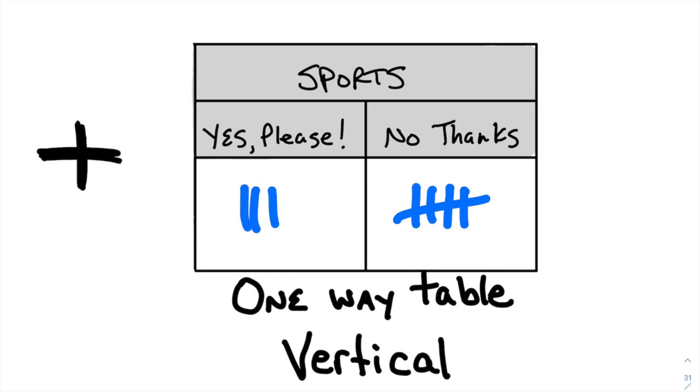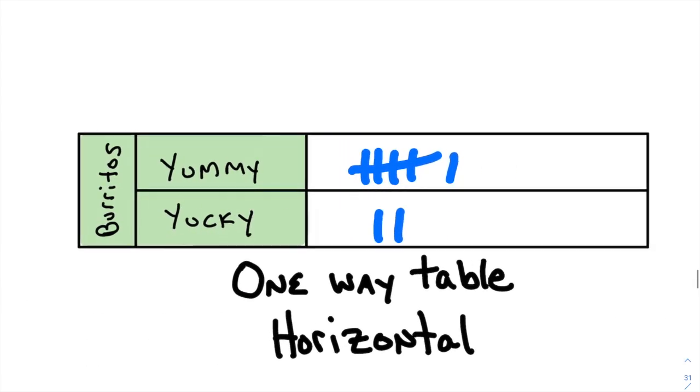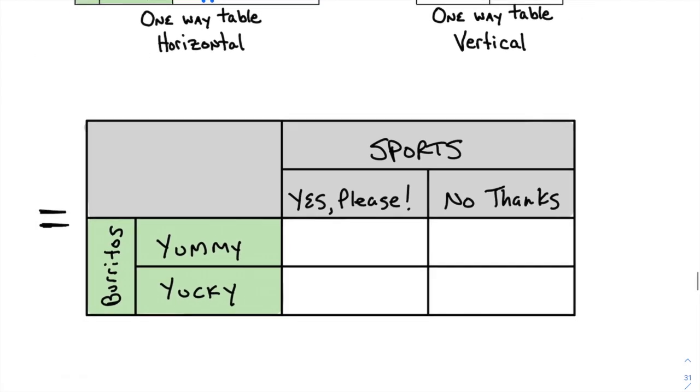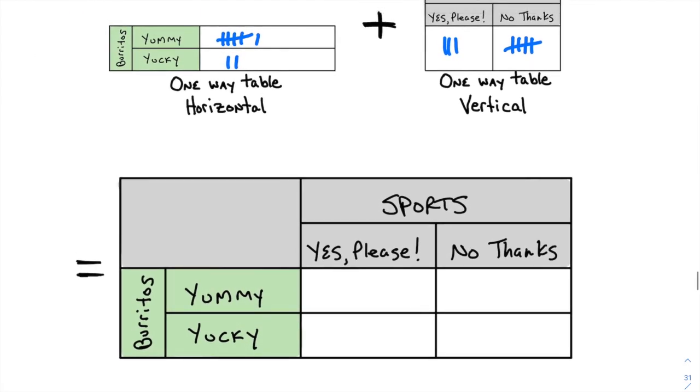Either they're vertical like this one, because they go up and down, or they're horizontal. A two-way frequency table is literally just taking those two things and marrying them together.